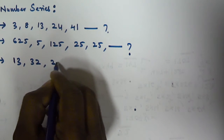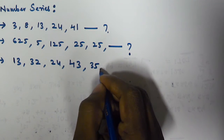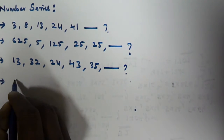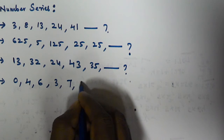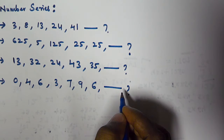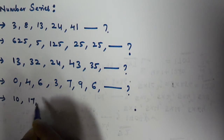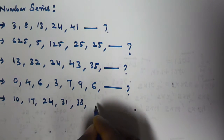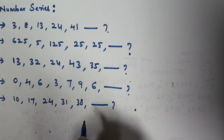The third problem is: 13, 32, 24, 43, 35. What number comes next? The fourth problem is: 0, 4, 6, 3, 7, 8, 9, 6. What number comes next? And the fifth problem is: 10, 17, 24, 31, and 38. What number comes next? We have to solve all these problems.